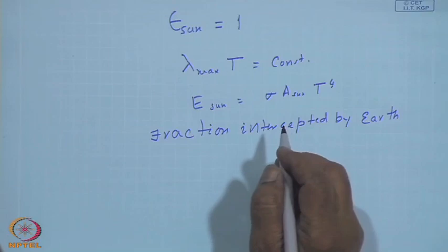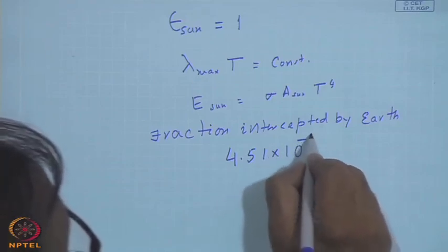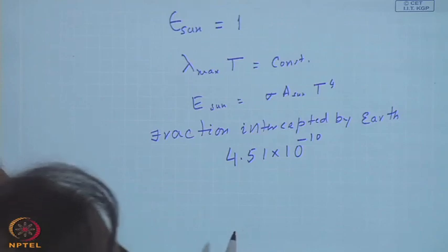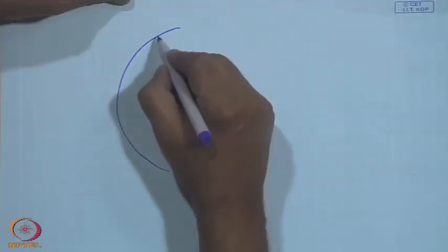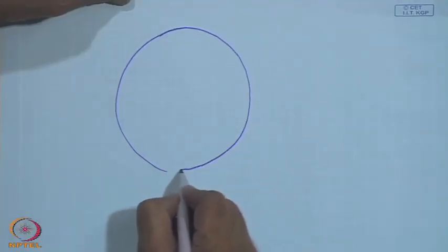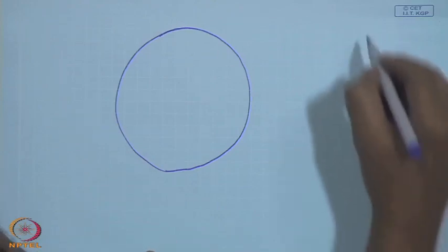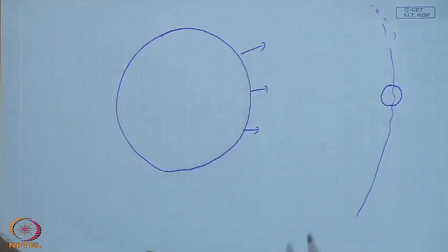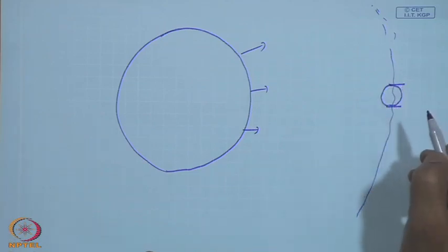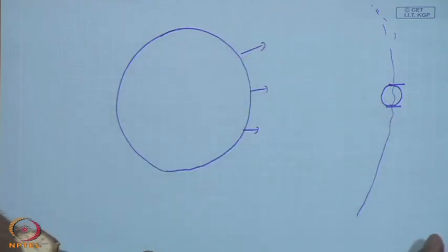Can you guess how large or how small a fraction of the sun's energy is intercepted by the Earth? Only 4.51 × 10⁻¹⁰ is intercepted. This becomes clear when you consider: the sun's sphere at Earth's orbital distance collects all the energy emitted, and the projected area of the Earth is a small fraction of that total sphere area, which turns out to be 4.51 × 10⁻¹⁰.